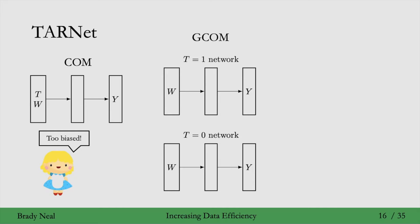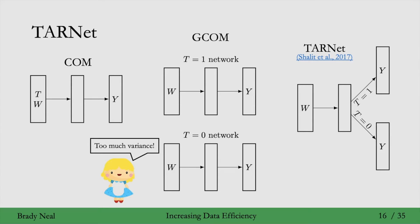Both of these only take W as input. The problem with this is that we saw it could have too much variance because both of these networks are trained with less data.